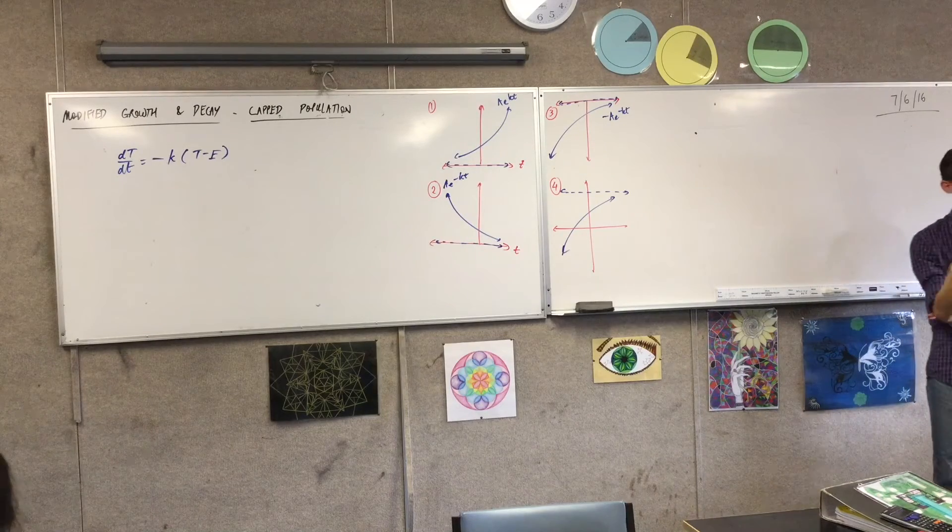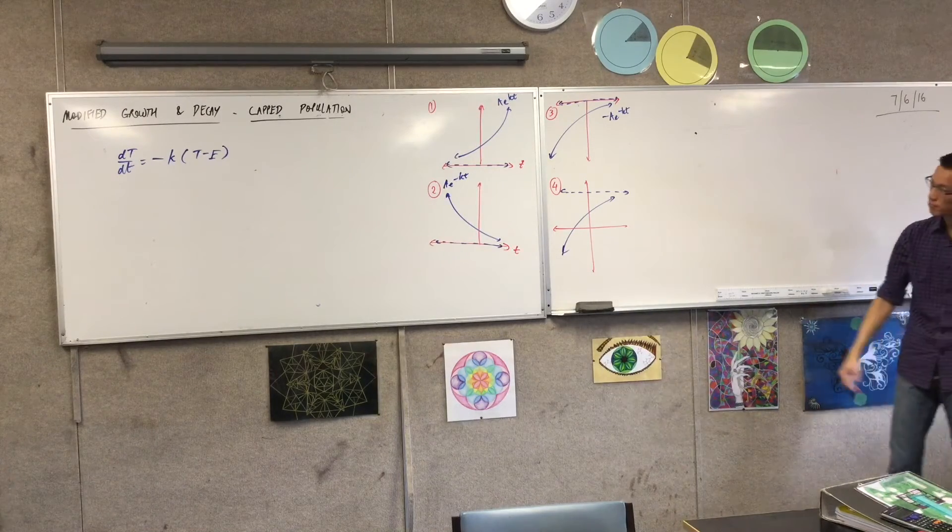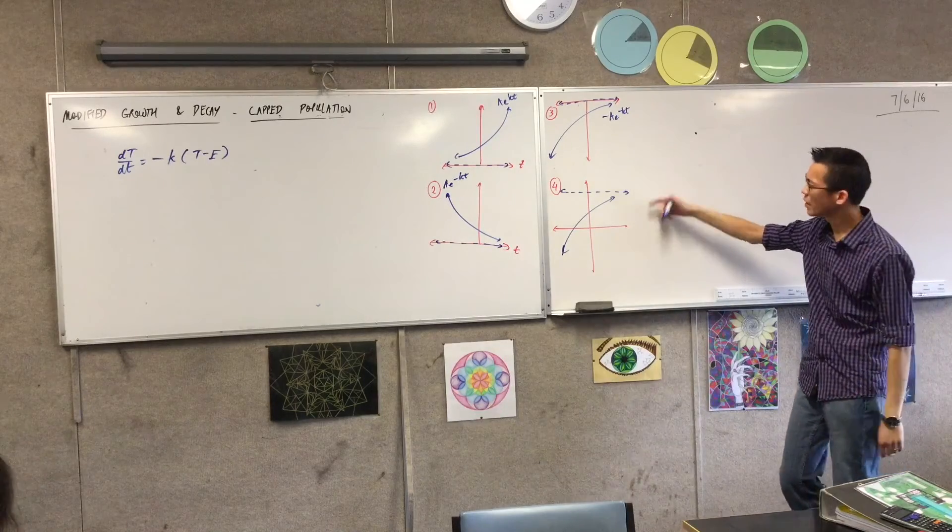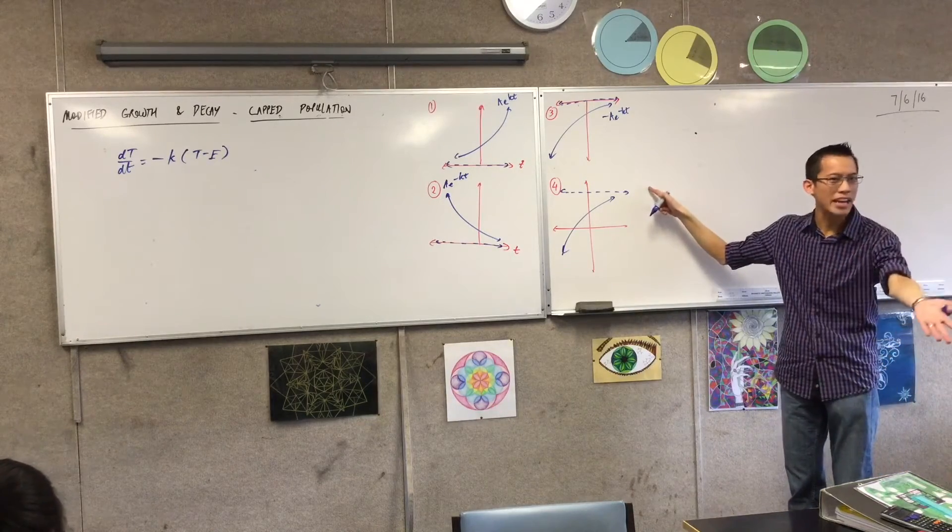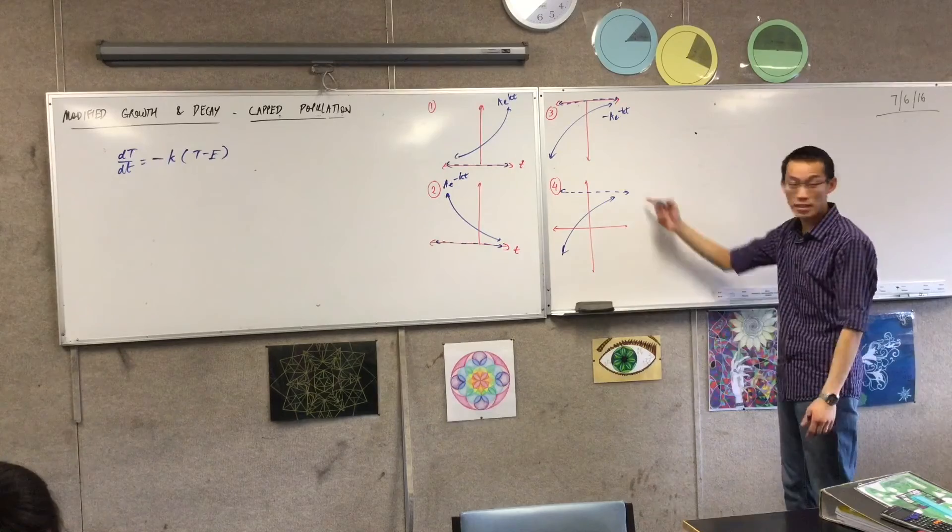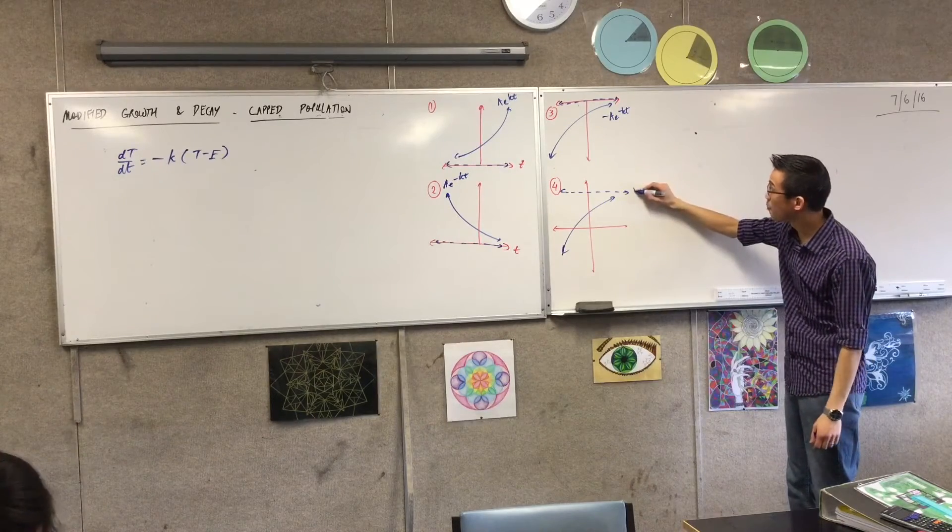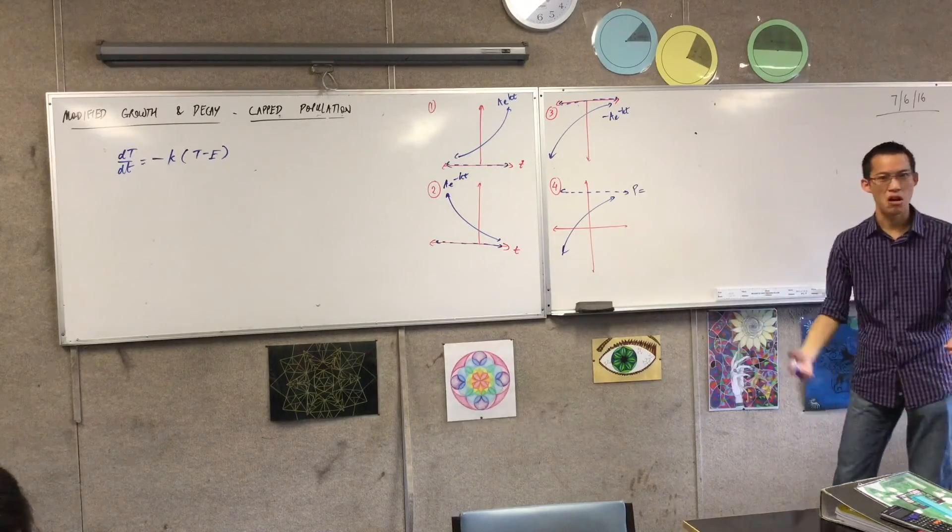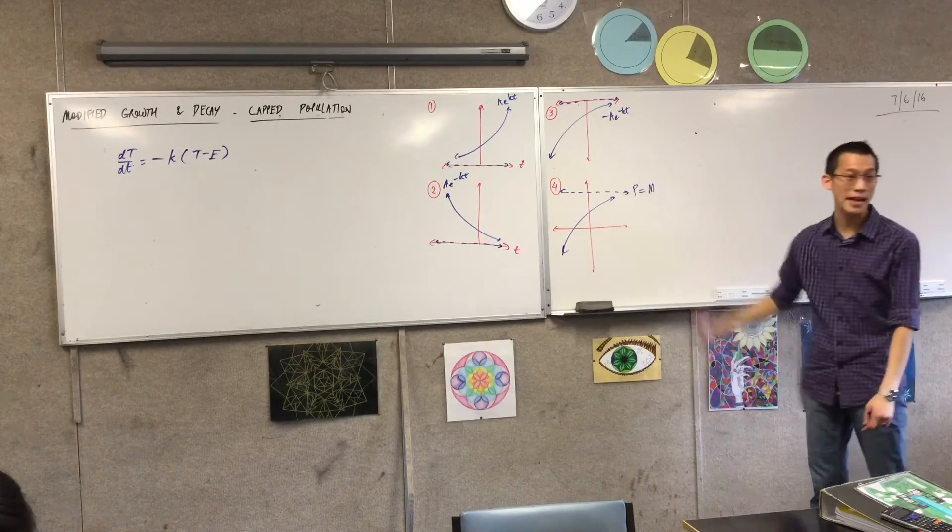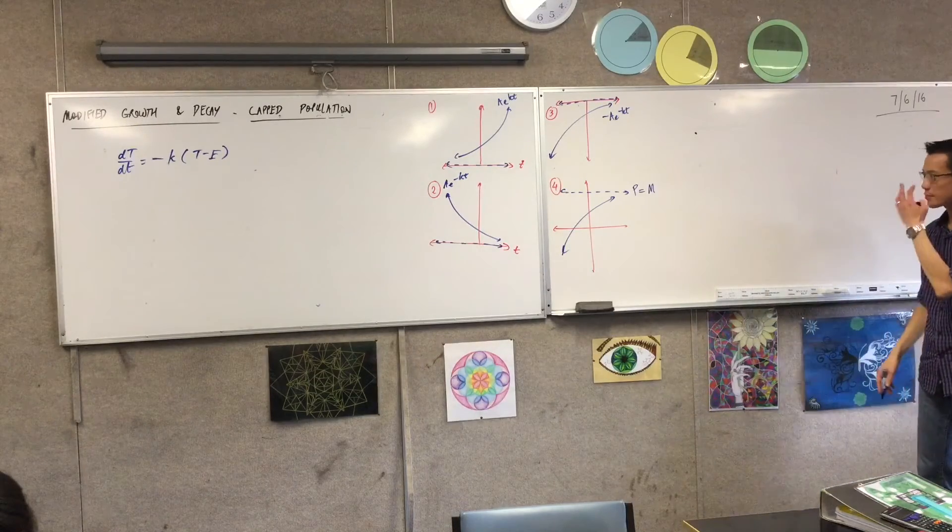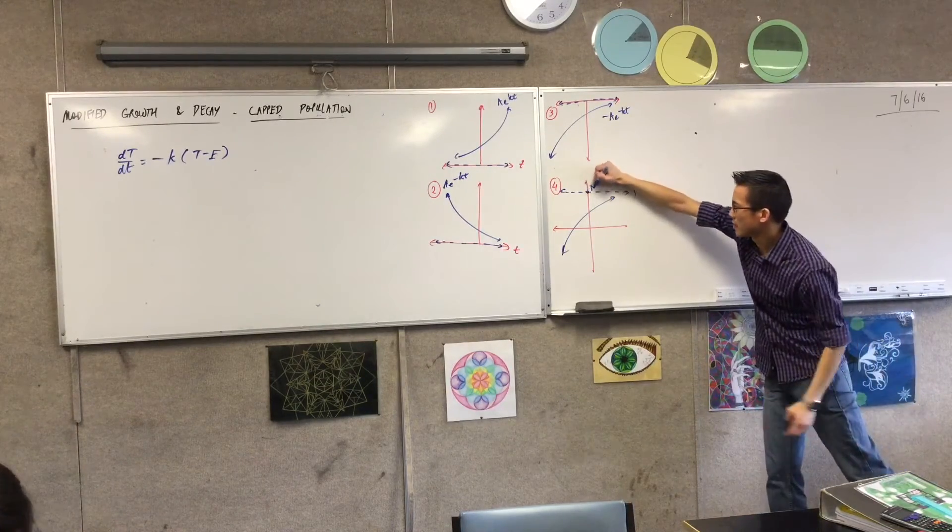Last time, when we had the decaying temperature, I just added a number, right? If we call this your maximum population or something like that, let's suppose that this is population equals, I don't know, let's call it M for maximum. So, that's my intercept there.